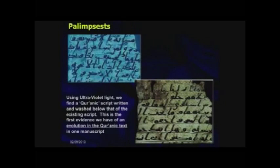And if you look carefully, you can see there's some writing underneath. They noticed this writing underneath, so they put it under an ultraviolet light, and by putting it under ultraviolet light, they can split the text and bring them aside and look at the two texts.